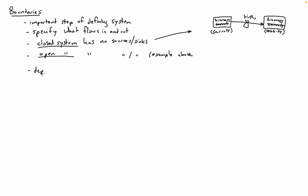The boundaries often depend on the time scale we're considering. For example, when we talk about carbon we'll look at the short-term cycle — say, carbon in the ocean over a year or decade — and we'd draw different boundaries than if we were looking at millions of years. There's a tiny bit of carbon sinking to the bottom of the ocean every year; on a short-term scale it's negligible, but over millions of years it adds up and becomes really important. So the boundaries of the model will depend on the time scale.